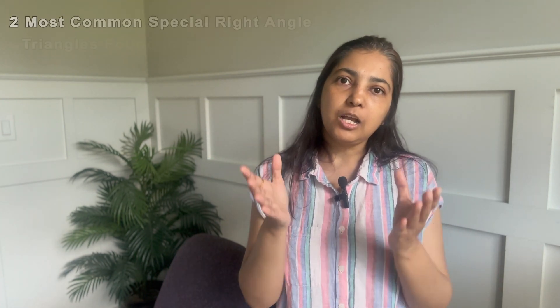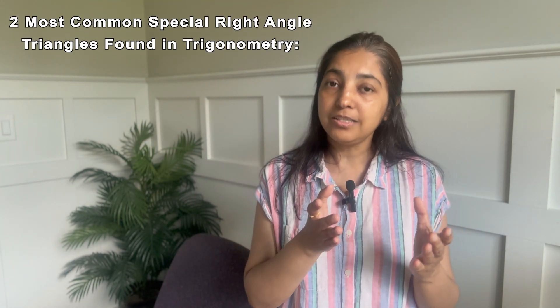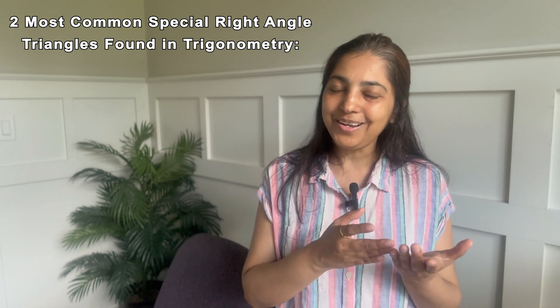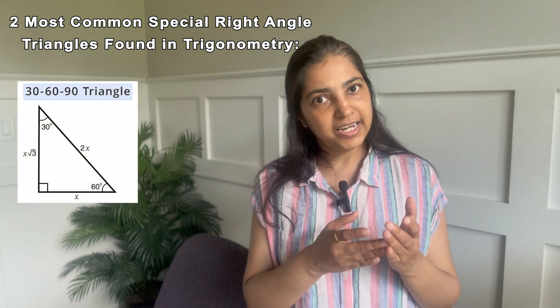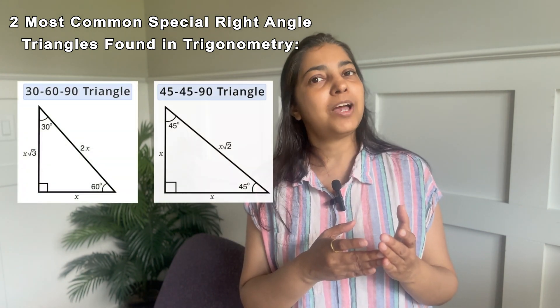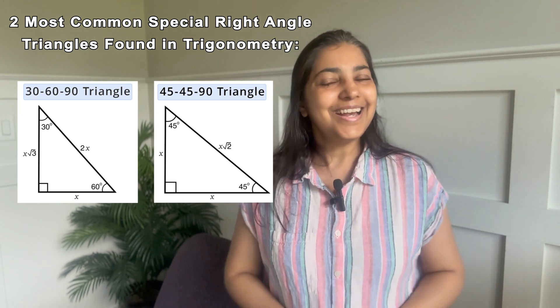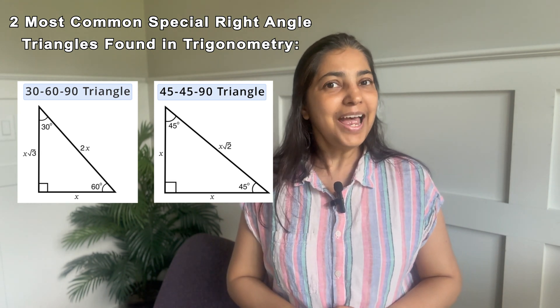Before I get started, let me also inform you that trigonometry specifically deals with right angle triangles, meaning one of the angles is 90 degrees. The most common combinations of special right triangles are 30-60-90 and 45-45-90. That's the bit of introduction I have. Now let's get started.